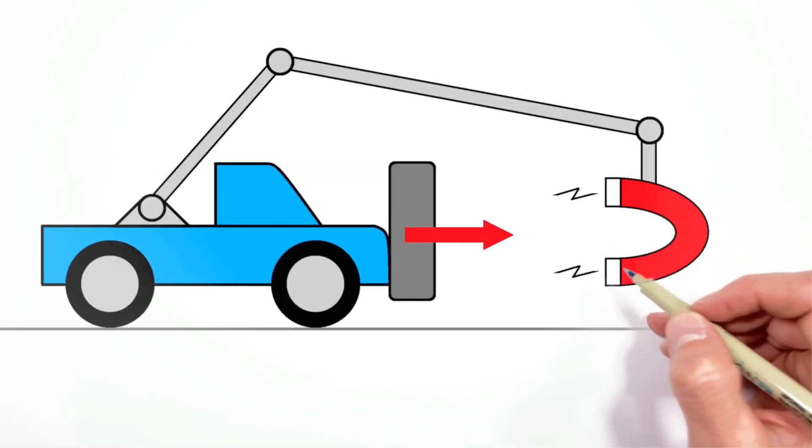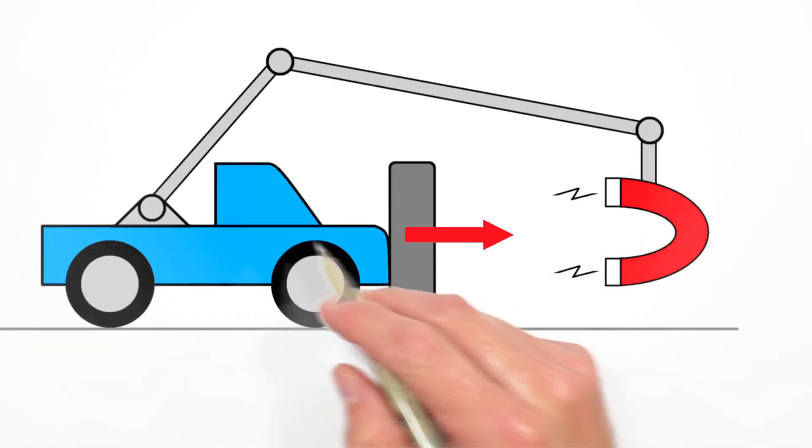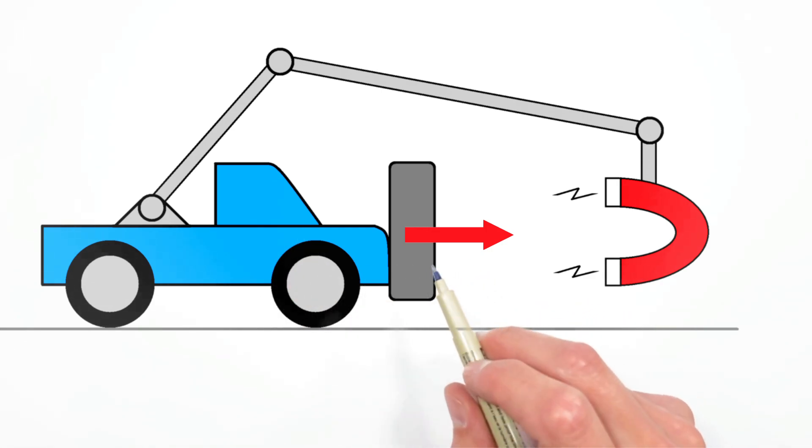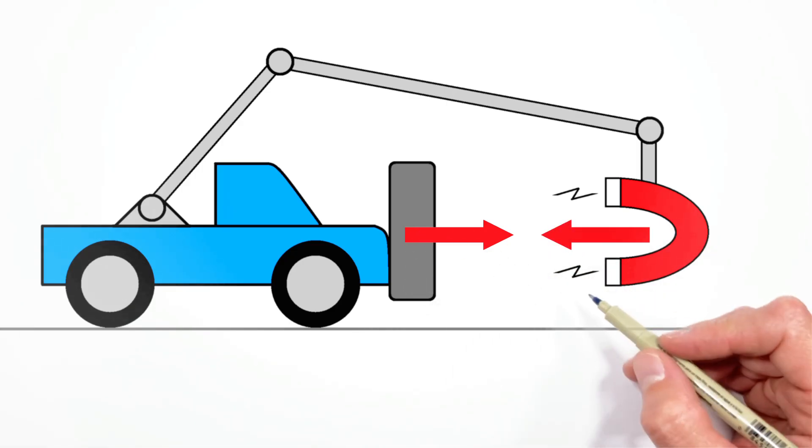And the situation with the magnet and the truck really isn't all that different. Yeah, the magnet is going to pull on the truck and the steel plate to the right. But, because of Newton's Third Law, the magnet is going to be pulled back to the left.